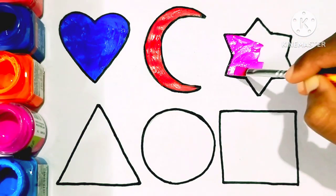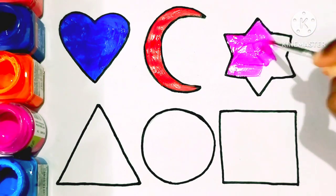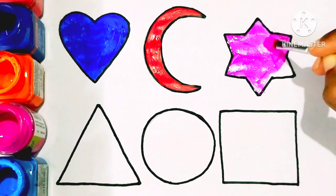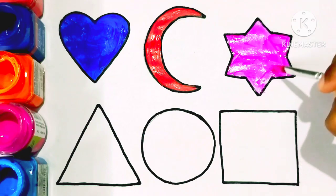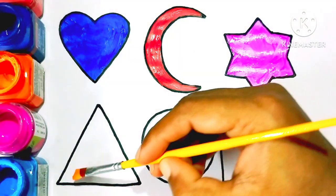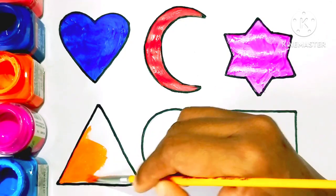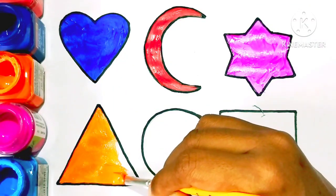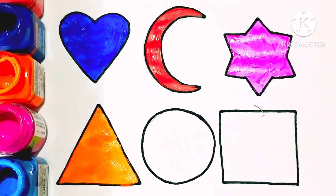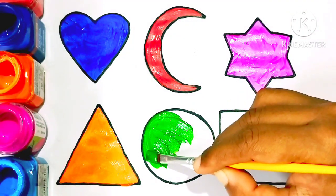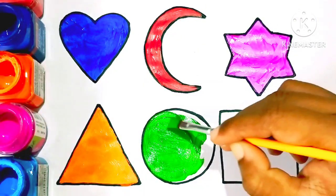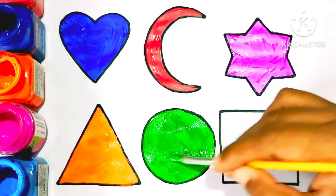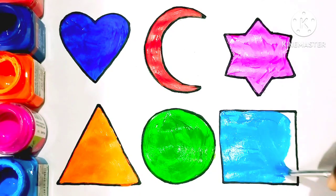A B C D E F G H I J K... Pink color star. Orange color triangle. Green color circle. Sky color square.